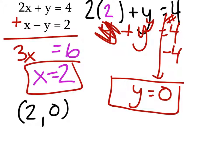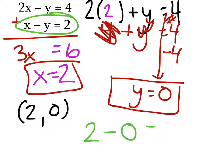But I should check this. Using the second equation: X is 2, so we have 2 minus Y, which we said is 0. Does that equal 2? Yes, it does. We checked it. We're good.